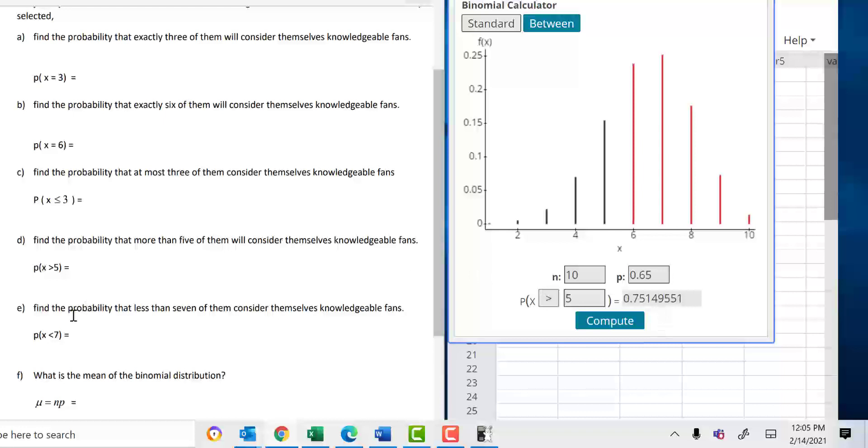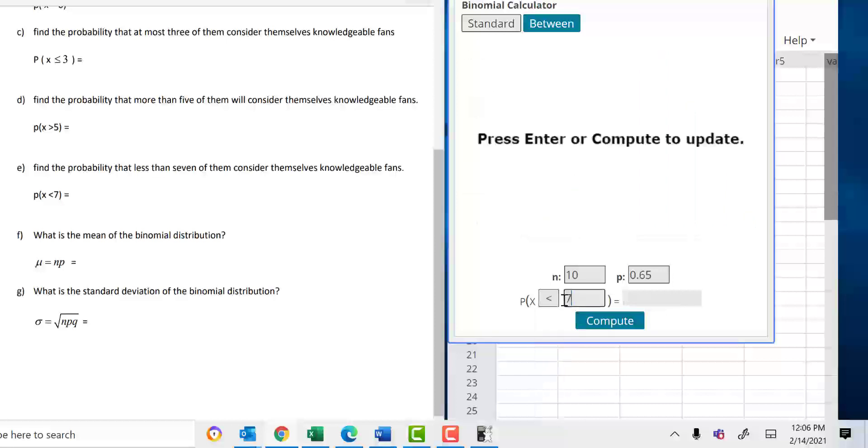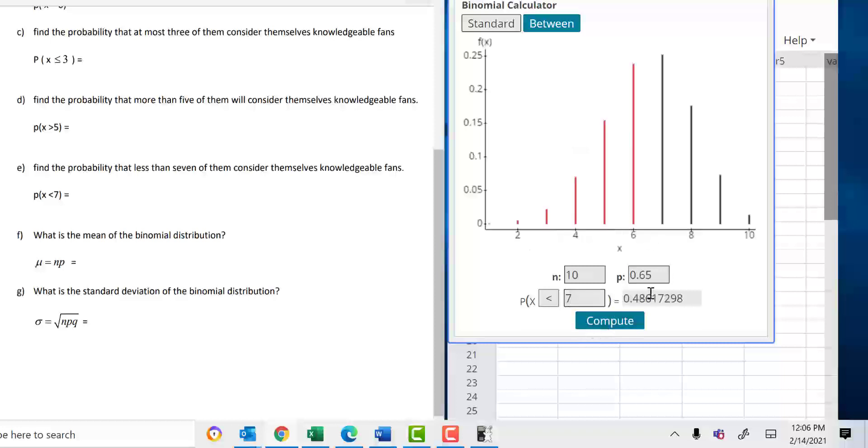Find the probability now part E. Find the probability that less than 7 of them consider themselves knowledgeable fans. Less than 7. This is the sign less. And just change it to 7. And when you hit compute, it's going to show you, it's going to draw 6 and less for you because less than 7 means 6 and less. Hit compute. And here you go. You get the answer.